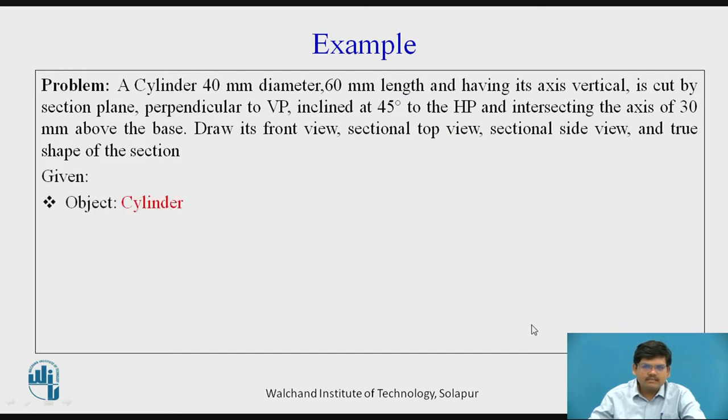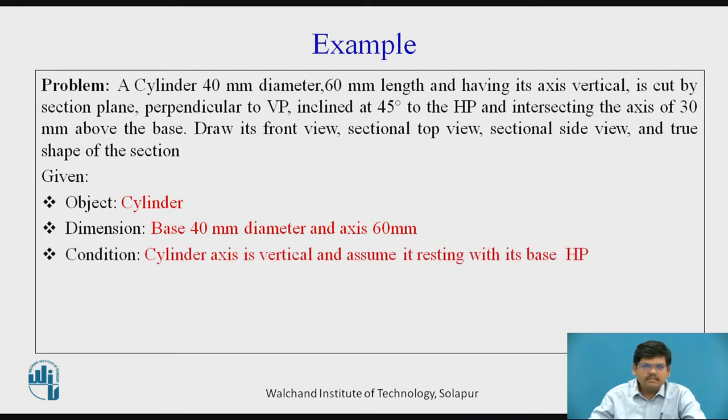We have object as cylinder. We have dimension like 40 mm diameter and axis 60 mm. Then the cylinder is vertical and assume it is resting in HP on its base, as it is said that the axis is vertical.